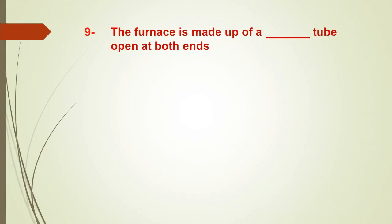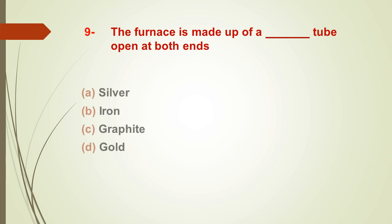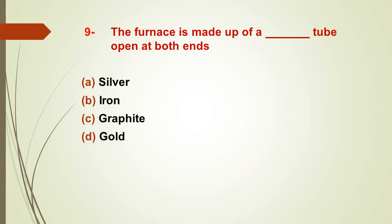Question number nine: the furnace is made up of a dash tube open at both ends — what is the material of the tube? Options: A) silver, B) iron, C) graphite, D) gold. The right answer is C — graphite. In the electrothermal atomization process, the tube is made of graphite.